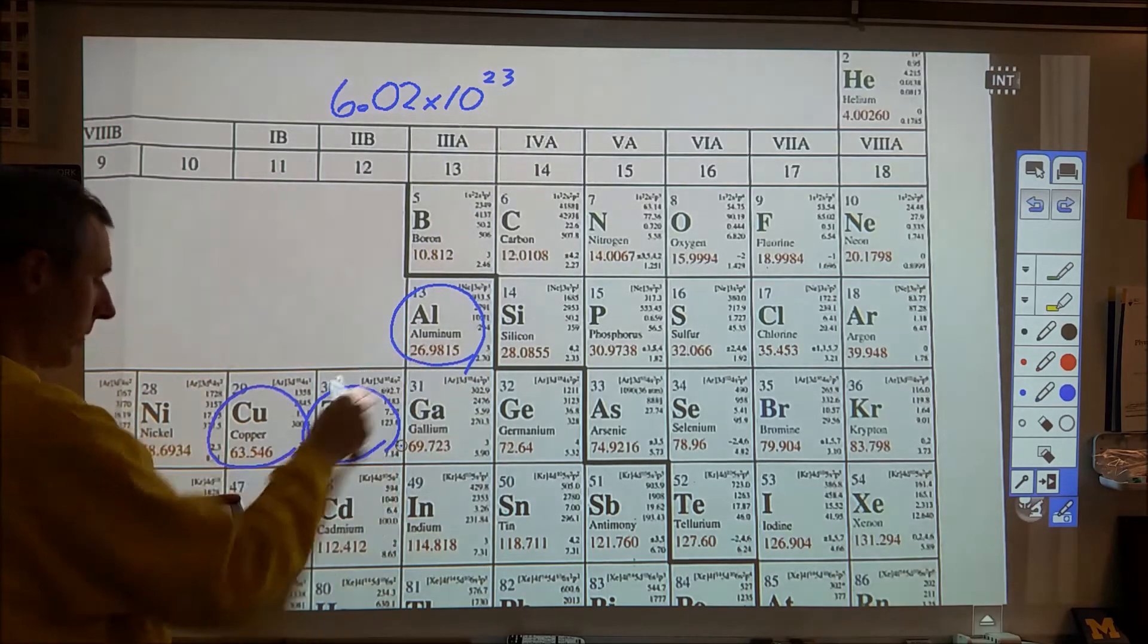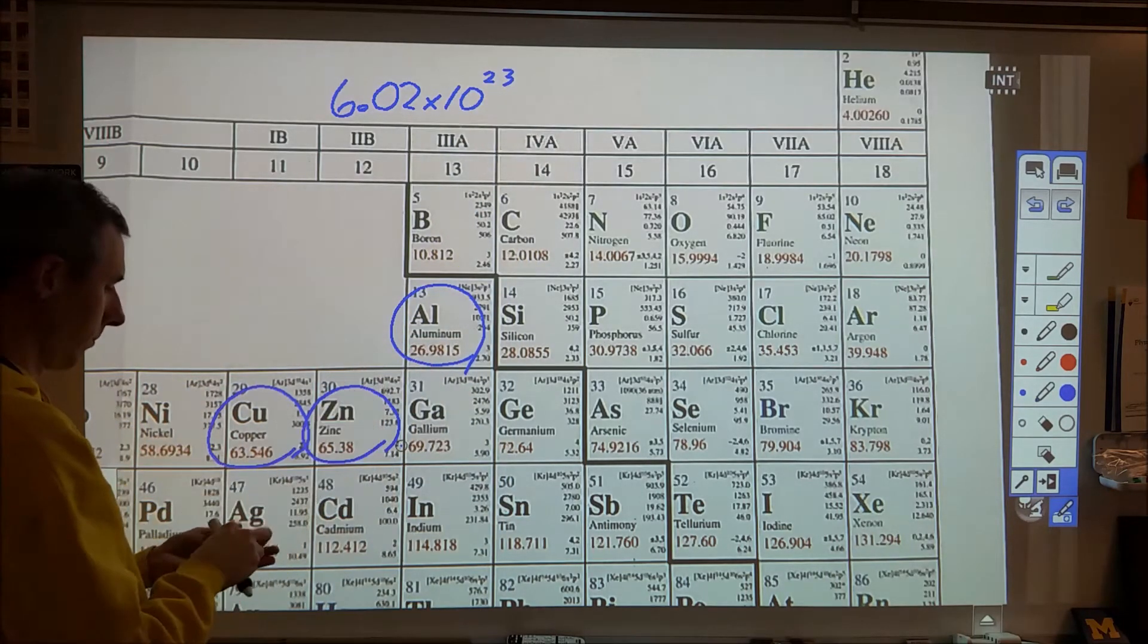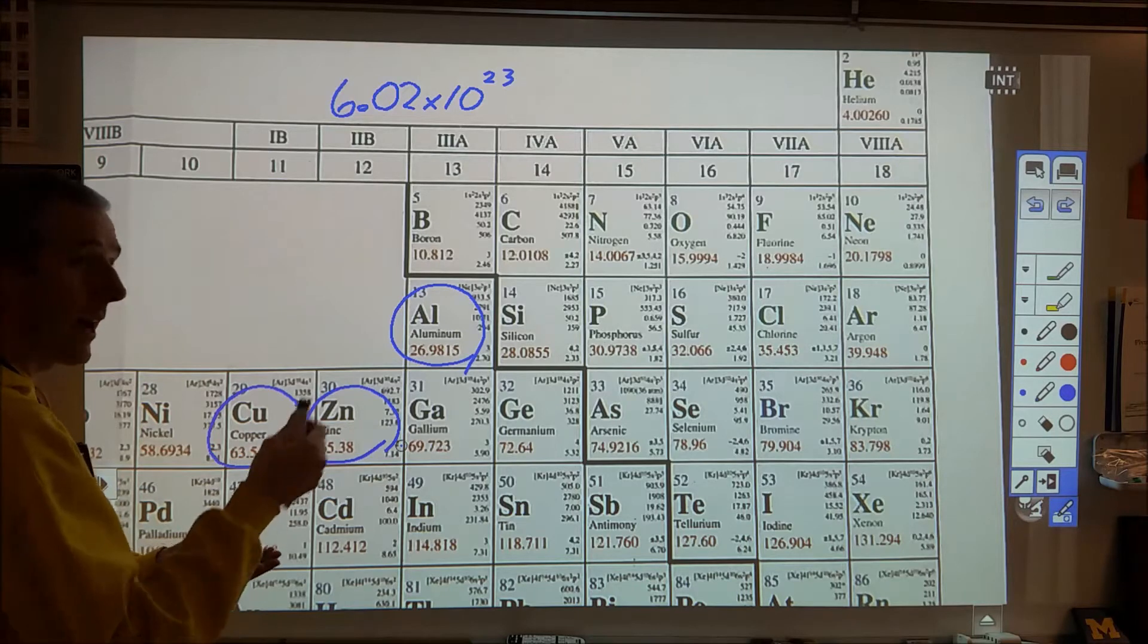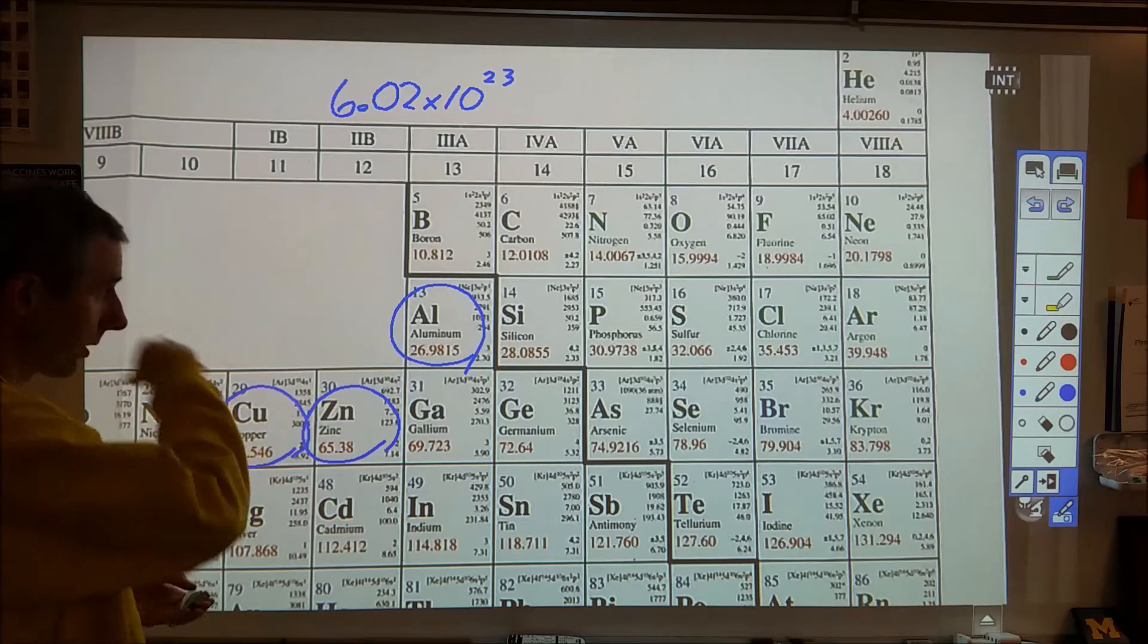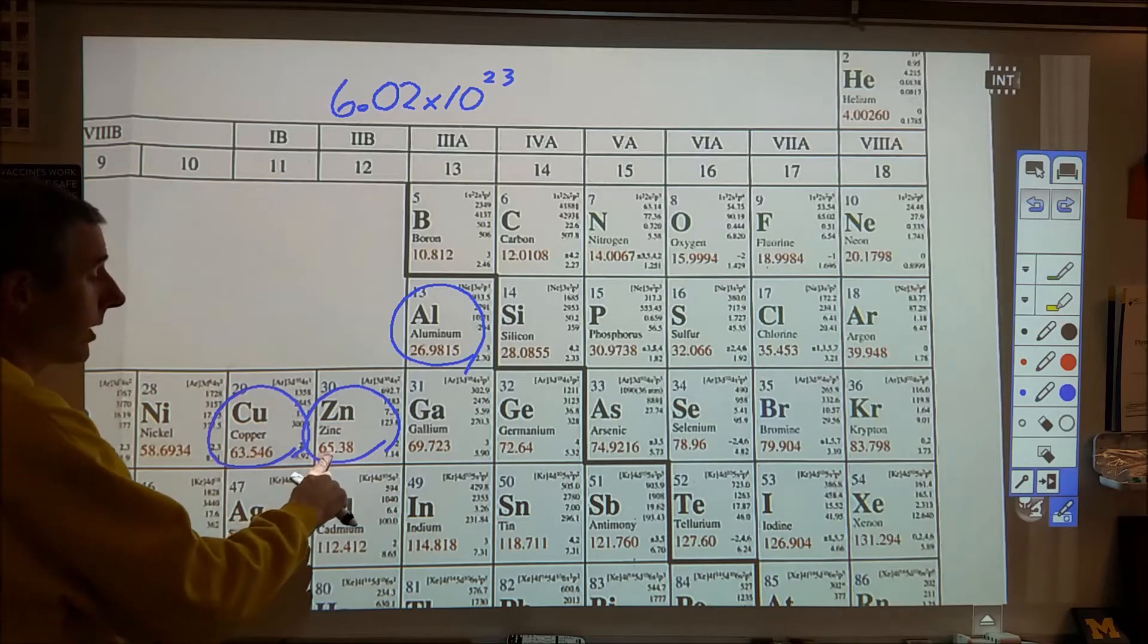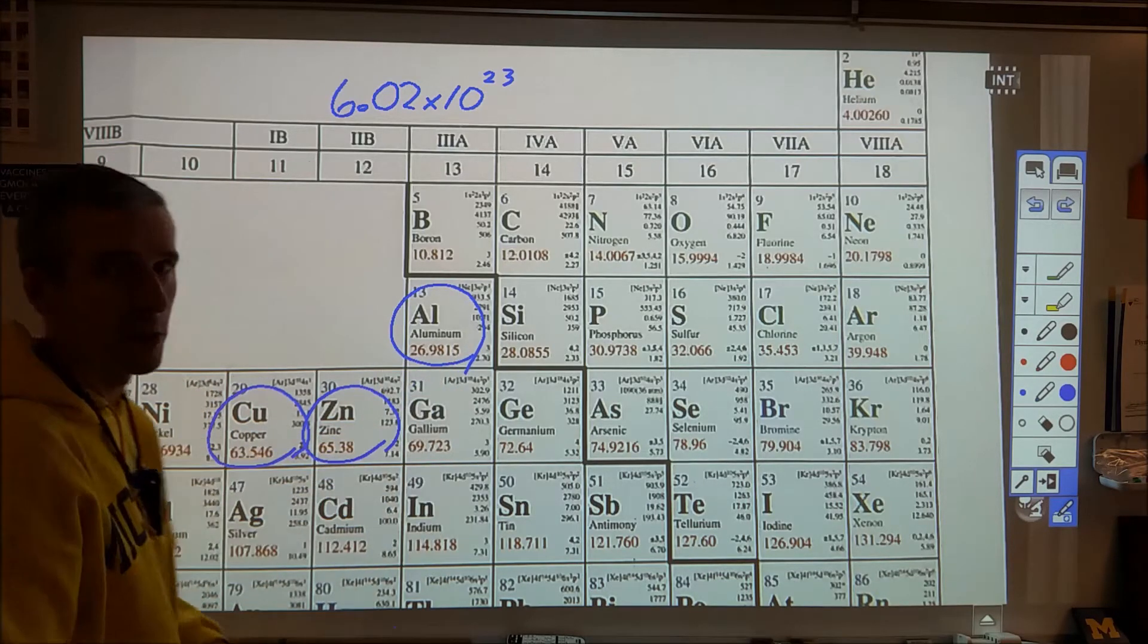So I have 6.02 times 10 to the 23rd atoms of aluminum, atoms of zinc, and atoms of copper. Now they don't all have the same mass because an aluminum particle is a different mass than a zinc particle by this particular ratio, by a ratio of 65.38 to 26.98.